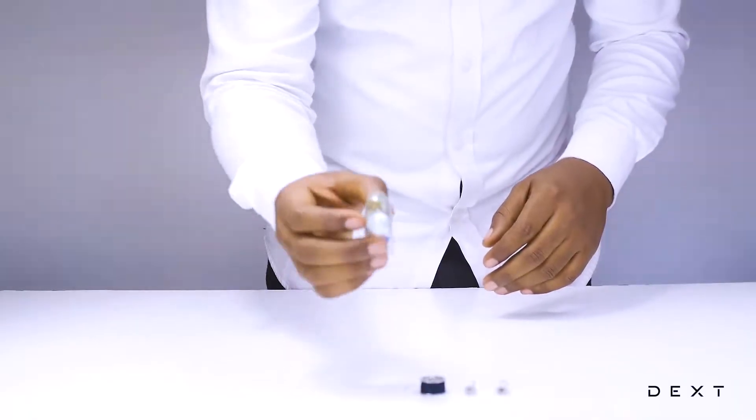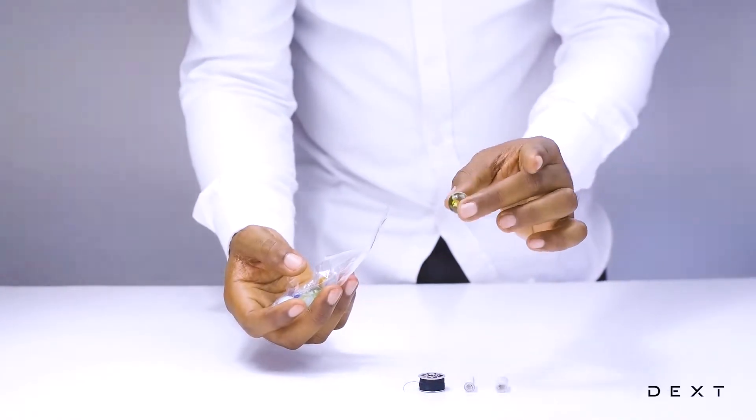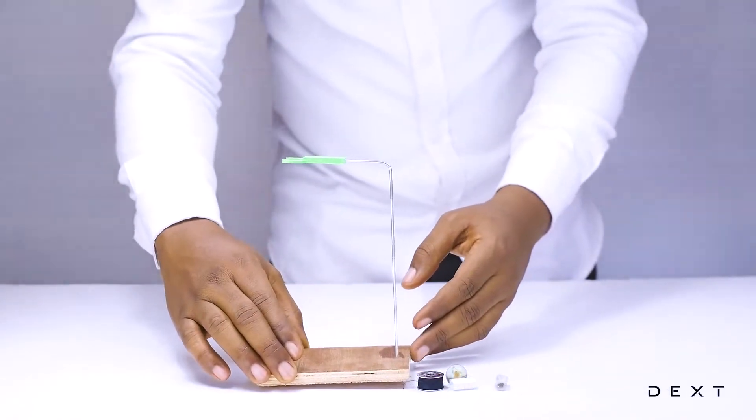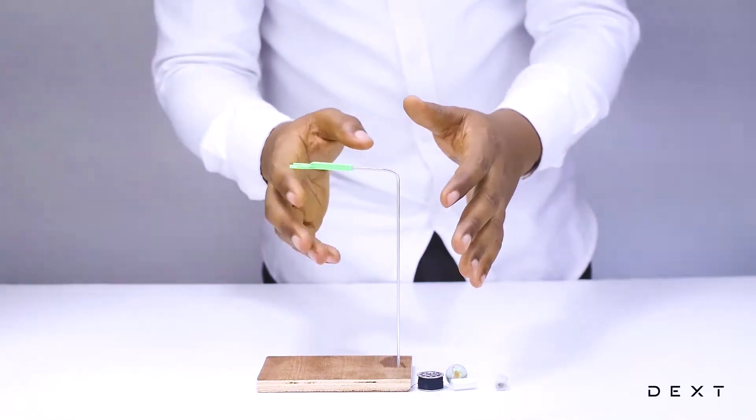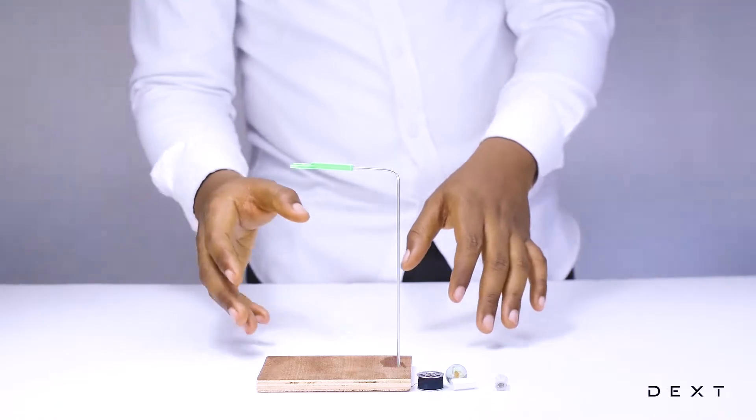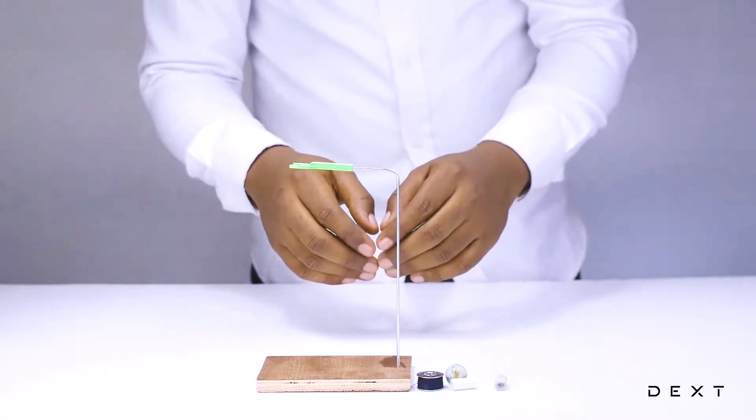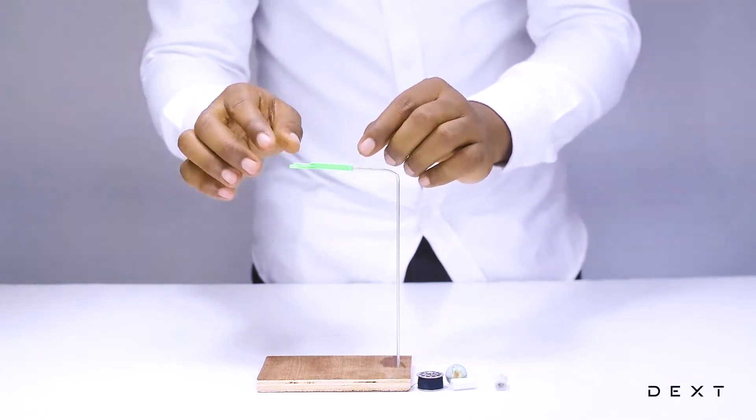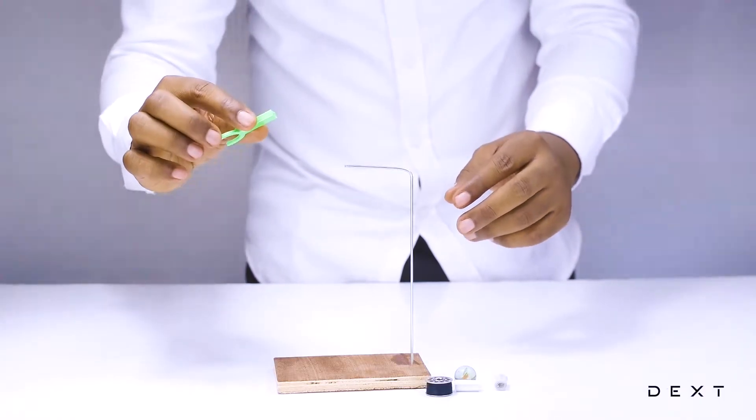You are going to build a simple pendulum. We are going to need only one marble and a simple retort stand that we built. But we are going to have to remove the plastic piece. So let's go ahead and remove that.